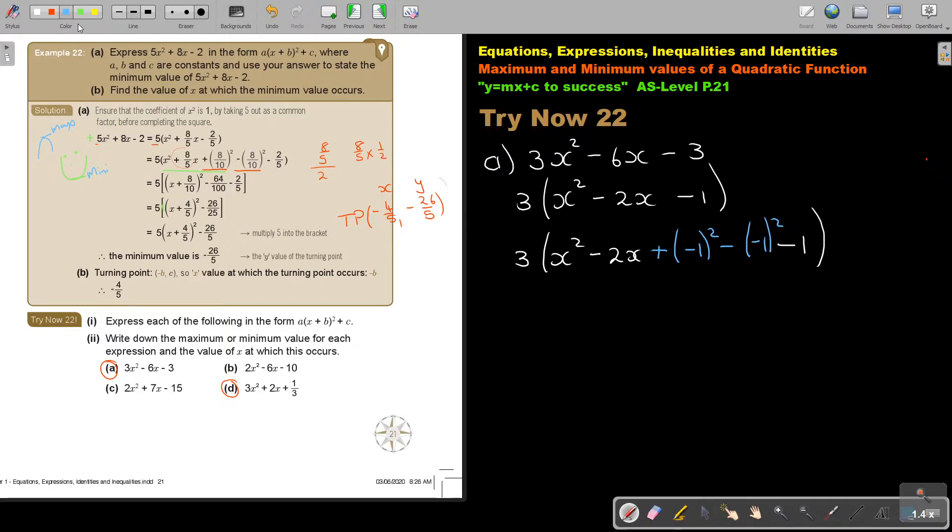Negative 1 squared. And I'm going to subtract negative 1 squared. And now, remember, can you see? Whatever I add, I must also subtract. And now, this is my perfect square. So I'm going to write my 3. This is my x. This is my sign. There is my 1. There's my square. And don't forget to put that brackets always. And now I simplify this.